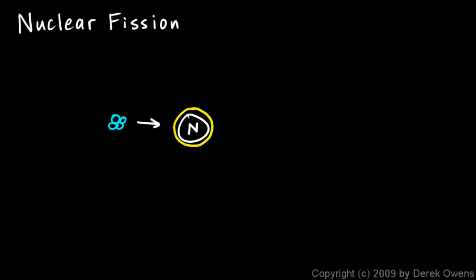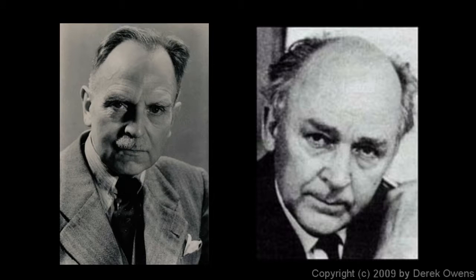From nitrogen you get oxygen. It's changed from one element into another. Rutherford did that in 1919. Soon after that, other physicists set about trying to repeat that experiment and trying to create other elements artificially. Two guys in Germany were working on this: Otto Hahn on the left and Fritz Strassmann on the right.